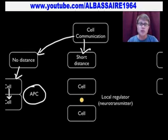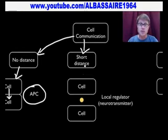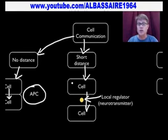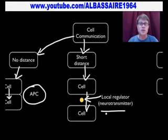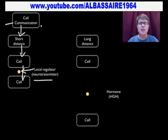Next I'll talk about are local regulators. If the distance is short and you want to make sure a message goes from cell to cell, you could use something called a local regulator. An example I'll talk about is when you have a neuron connected to another neuron through a synapse — you can send a neurotransmitter to make sure that message gets across. It's going just from one cell to another.